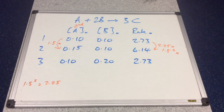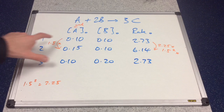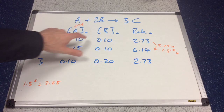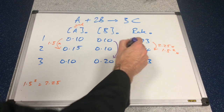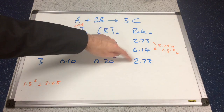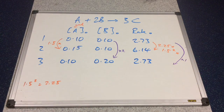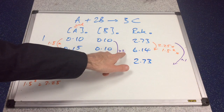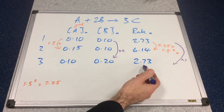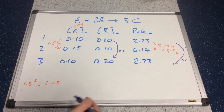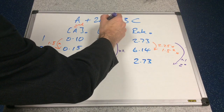Turning to B, we need to keep A constant, so we use experiments 1 and 3 — A is 0.1 both times. B has doubled. And what happened to the rate? It stayed the same. So we've raised 2 to the power 0 to get a one-fold increase, giving the same rate. Therefore B is zero order.